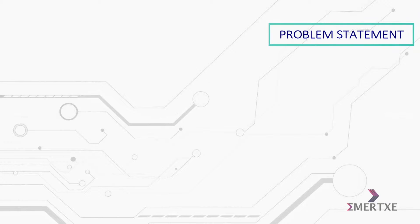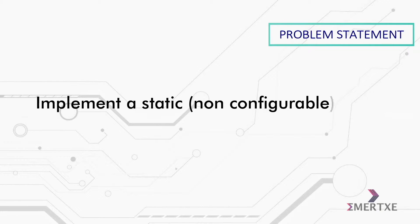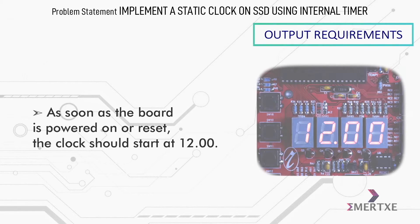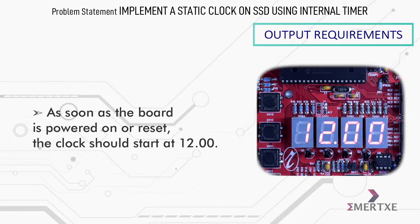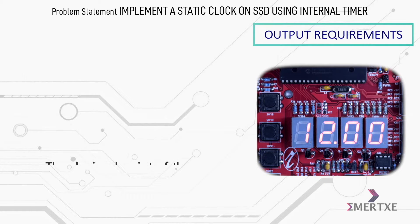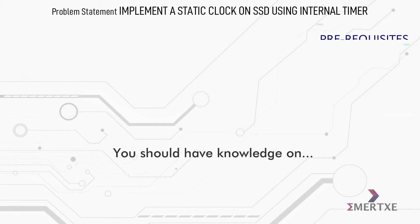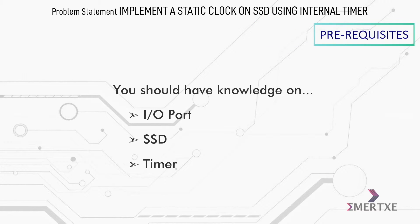In this assignment, you have to implement a static clock on SSD using an internal timer. Basically, the clock should start at 12 as soon as the board is powered on or reset. The decimal point of the hours field should blink every 500 milliseconds. The clock format should be 24 hours.